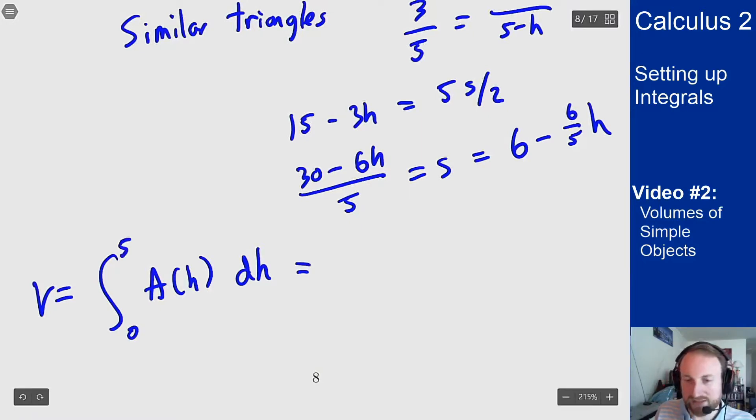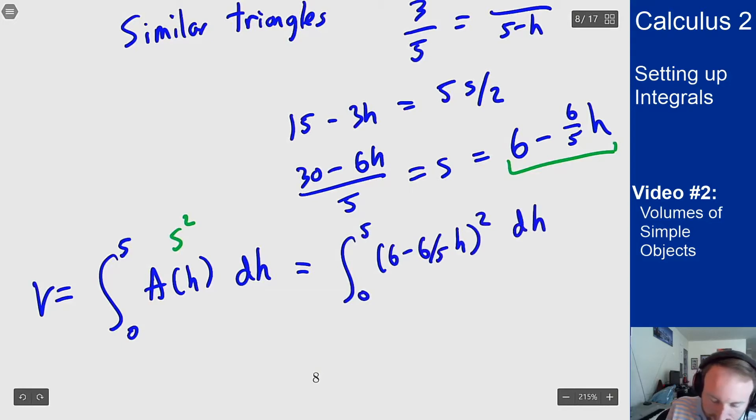Now what is the area of that square? Well it's going to be s squared. But since that's s, I can just put in that squared into my equation. Integral 0 to 5 of 6 minus 6 over 5h squared dh.